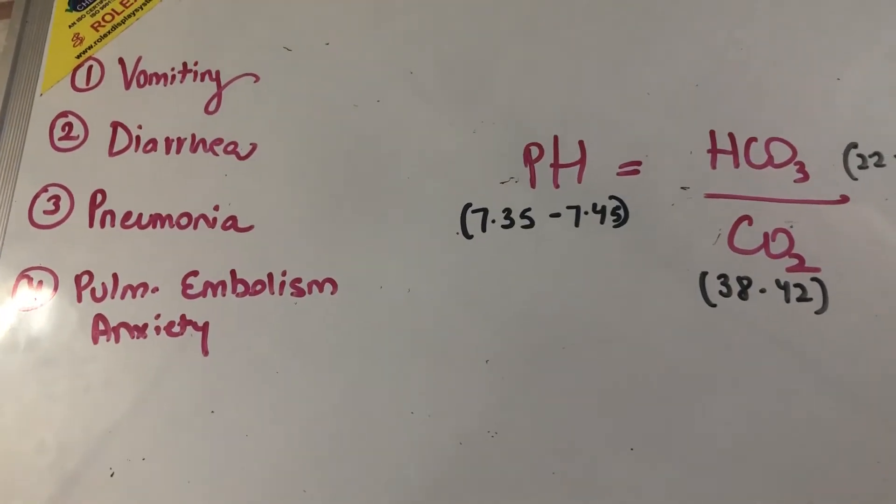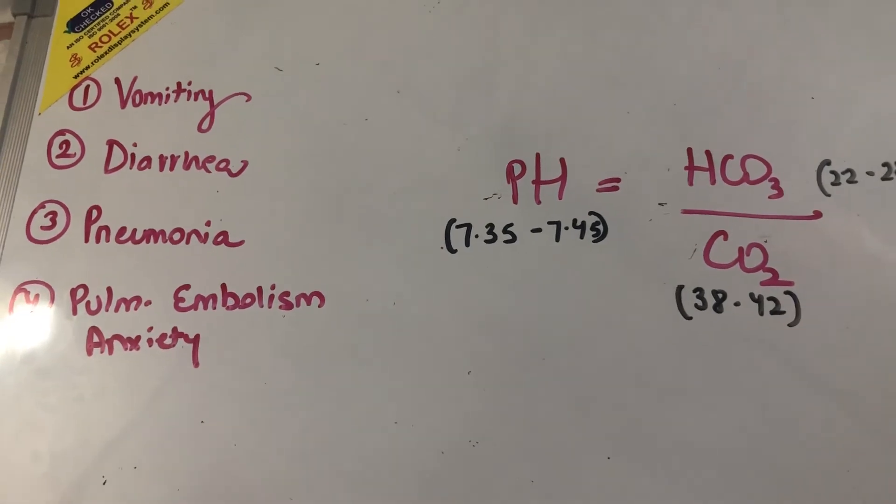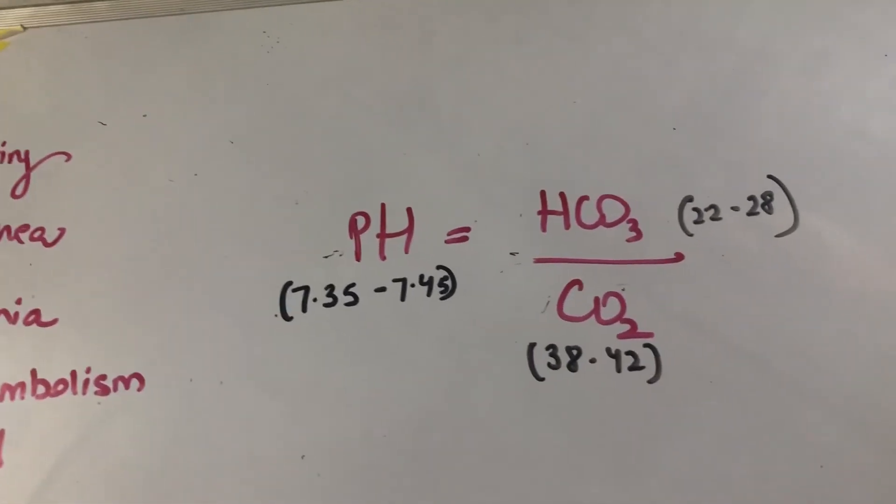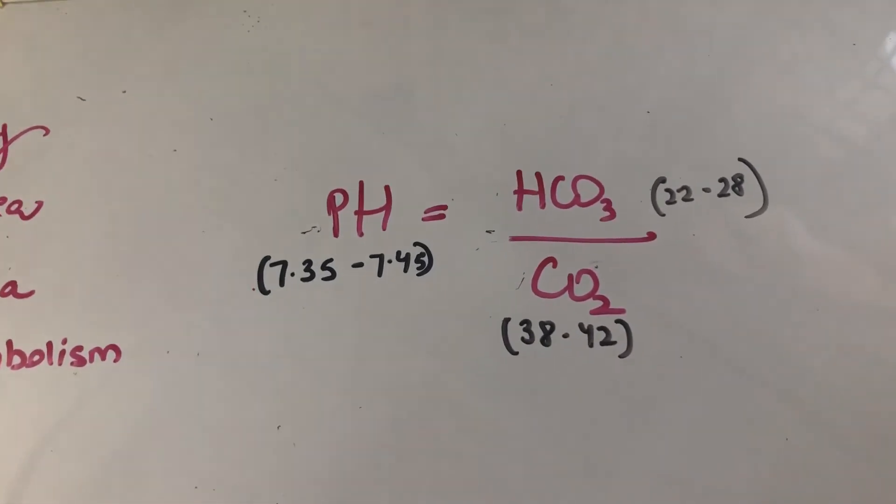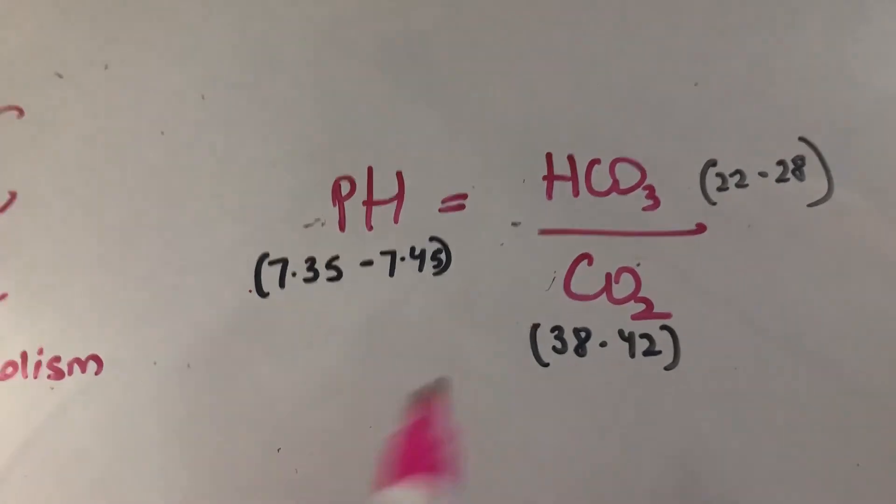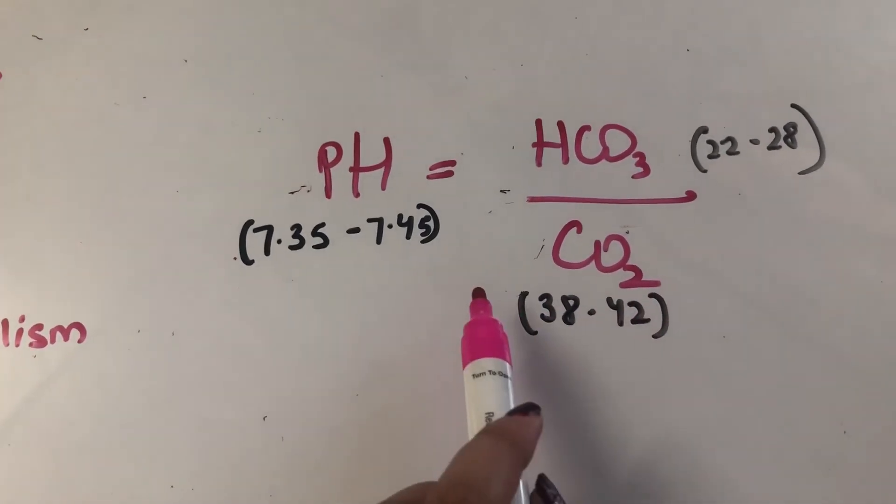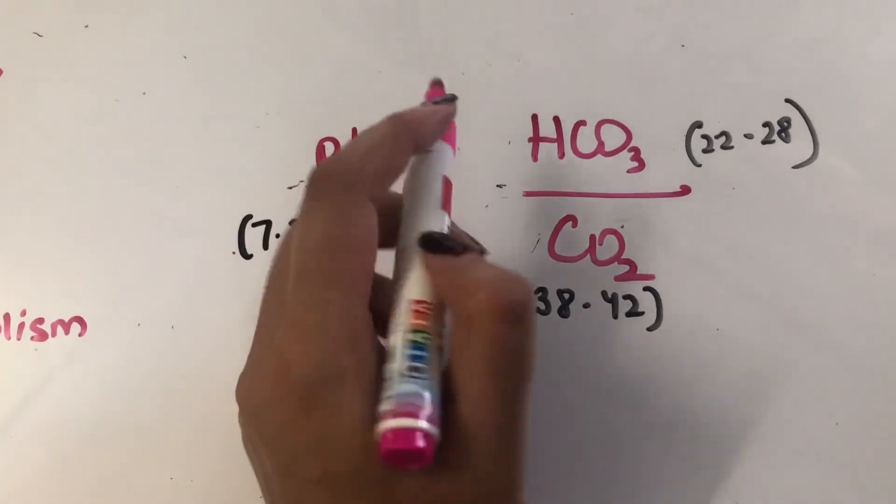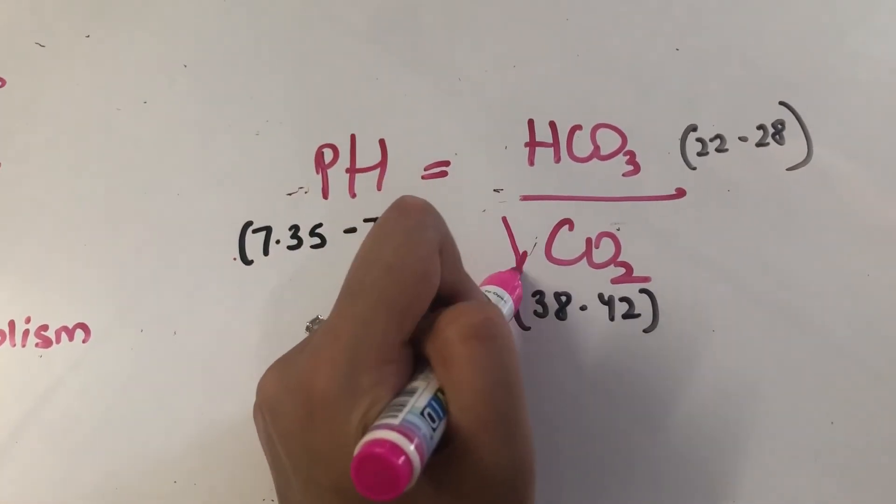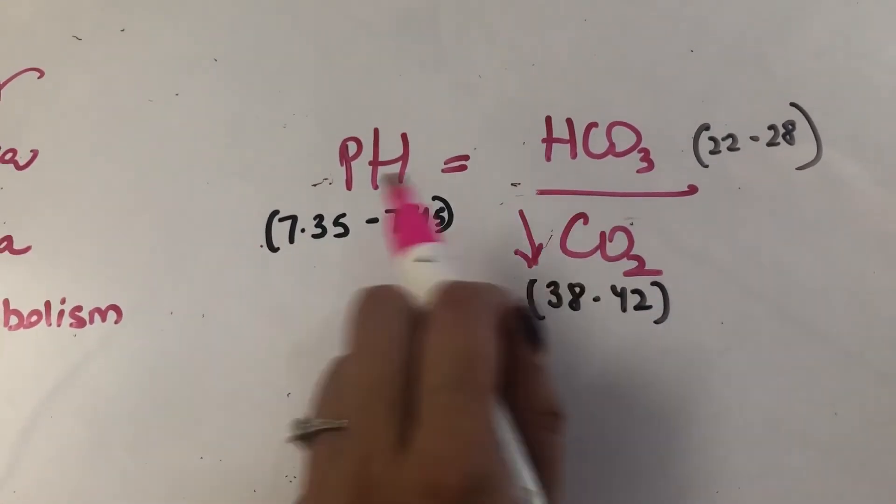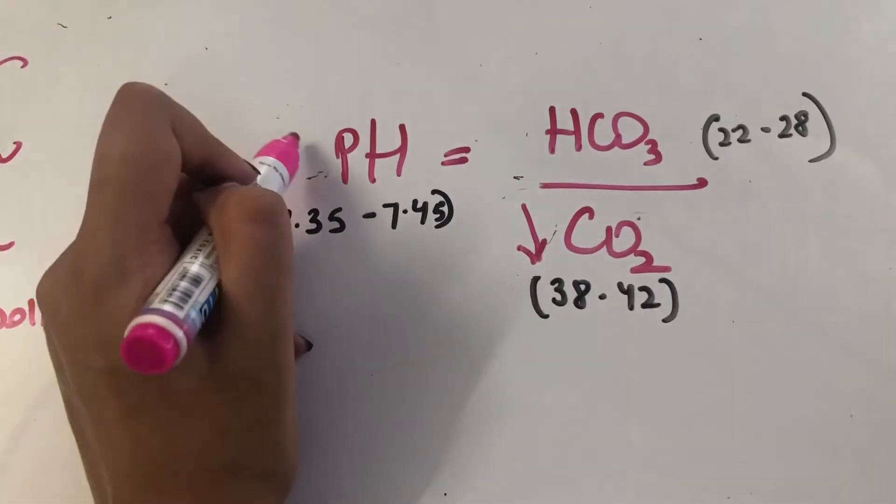So the last condition is pulmonary embolism or anxiety. So in anxiety, basically, you're hyperventilating, right? You're really, really breathing fast. You're panicky. And you're exhaling out a lot of carbon dioxide, more than needed. So when that happens, your carbon dioxide levels fall short. And obviously, the pH will then increase up.